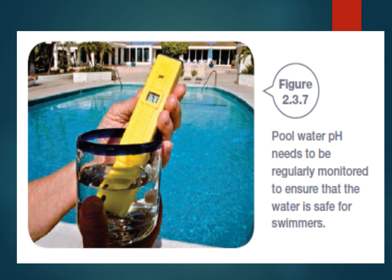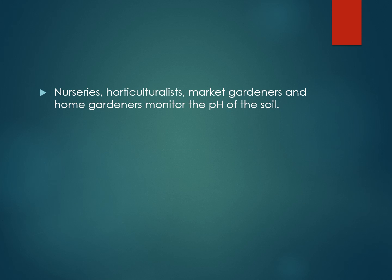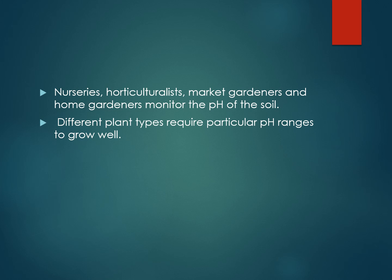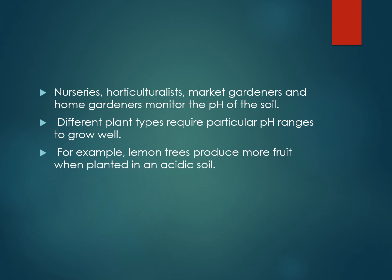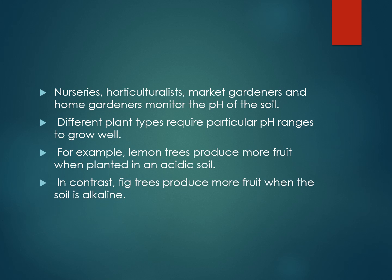pH is also important in gardening — the pH of soil really matters for different plants. Lemon trees produce more fruit in acidic soil. Camellias, rhododendrons, and azaleas grow and flower much better in acidic soil. Fig trees produce more fruit when the soil is alkaline, and peas and beans also grow better in alkaline rather than acidic soil.